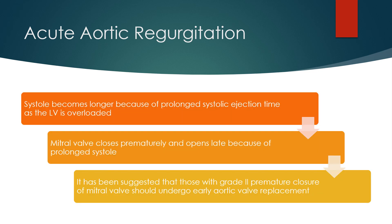Systole becomes longer because of prolonged systolic ejection time as the left ventricle is overloaded. Mitral valve closes prematurely and opens late because of prolonged systole. It has been suggested that those with grade 2 premature closure of mitral valve should undergo early aortic valve replacement.